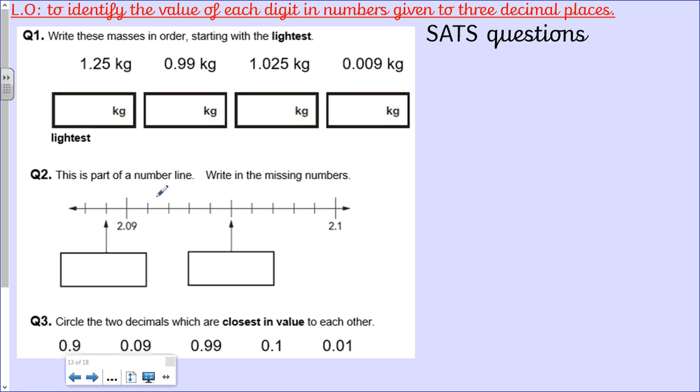We've then got a part of a number line. You need to write in the missing numbers. This is a tricky one. If this blows your mind, do not worry too much. Quite a few people when we did this on the actual SATs test did find it quite hard. You need to be thinking about how many intervals, how many jumps you have got between 2.09 and 2.1, and trying to work out what each of these jumps is worth. Have a go at that one if you fancy the challenge.